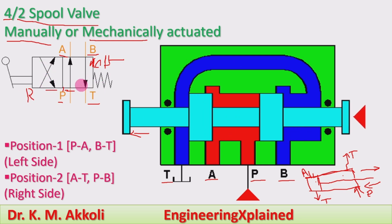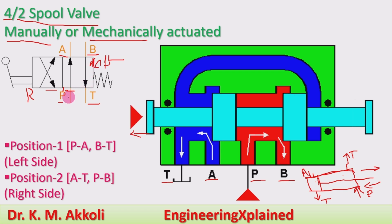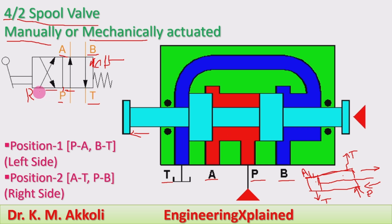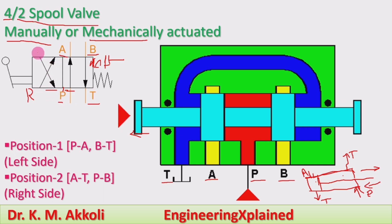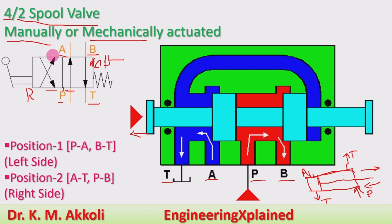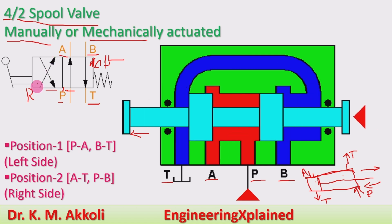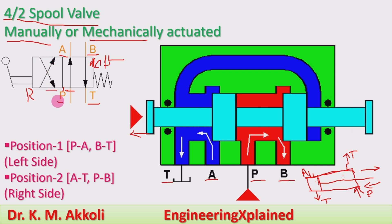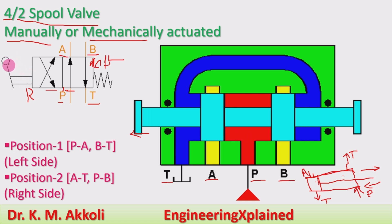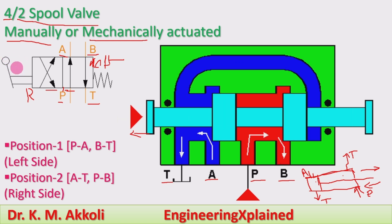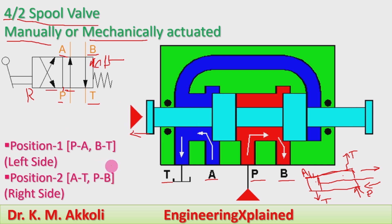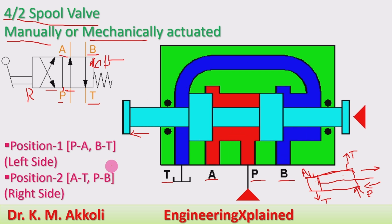In the animation: the left position connects pump to actuator and back to tank; the right position connects the pump to the back port and the actuator line to the tank. This is the lever manual actuation. Symbolically, the lever is shown to represent its operation. This is the working of the 4 by 2 spool valve, mechanically or manually actuated.